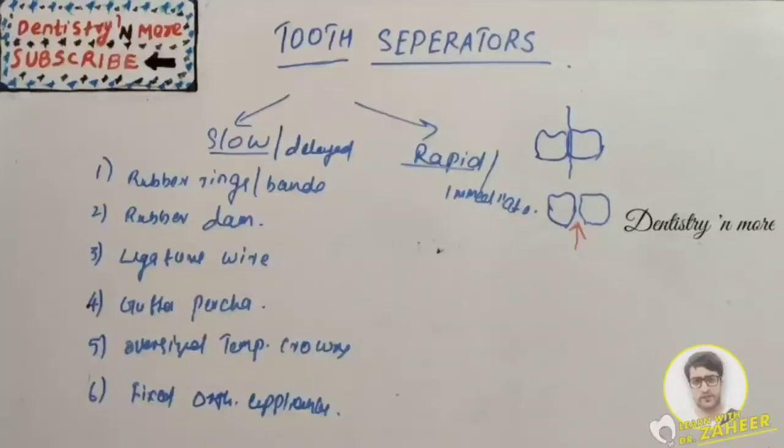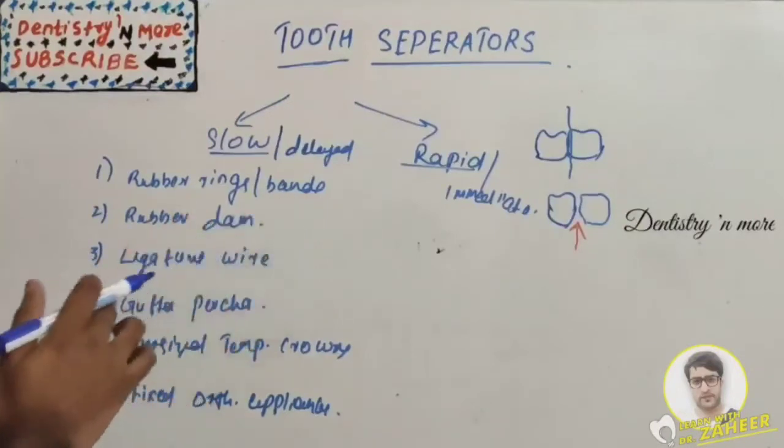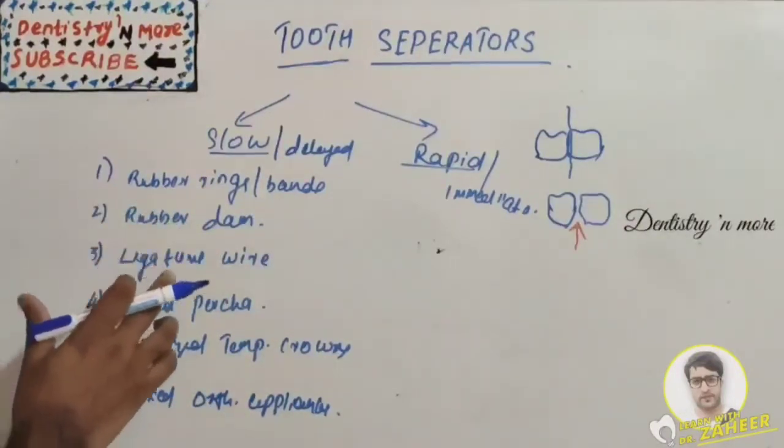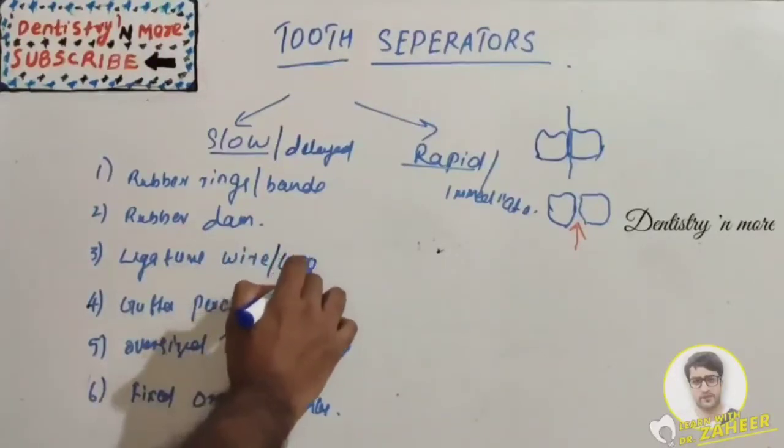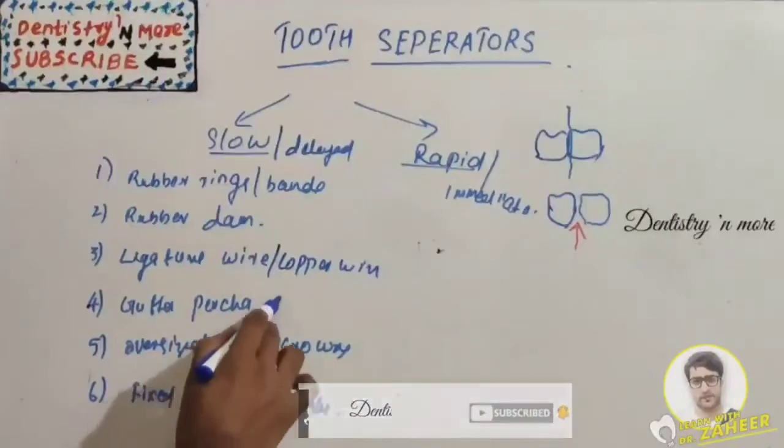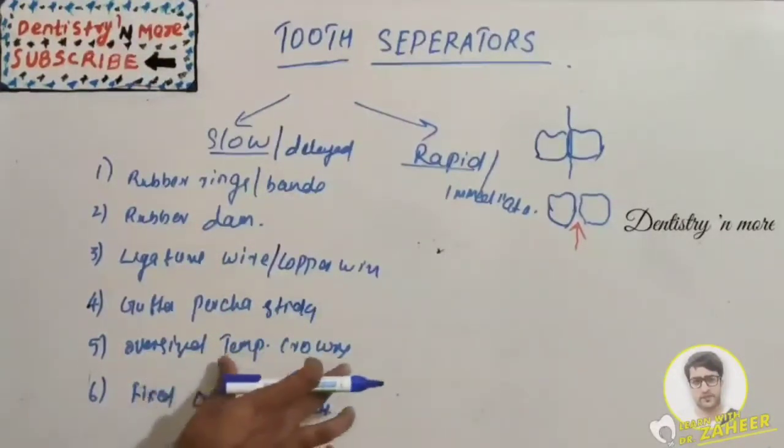The best advantage is there is no periodontal damage, but the disadvantage is that it's time-consuming and requires many visits. We have many methods in slow tooth separation: using rubber rings or bands, rubber dam sheets, ligature wire or copper wire, gutta percha sticks, oversized temporary crowns, and finally fixed orthodontic appliances.